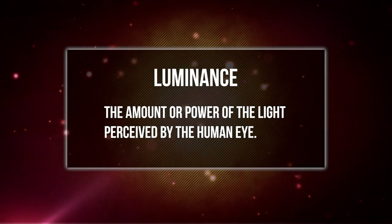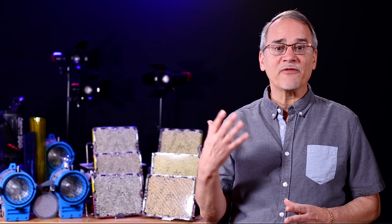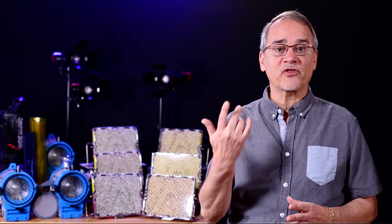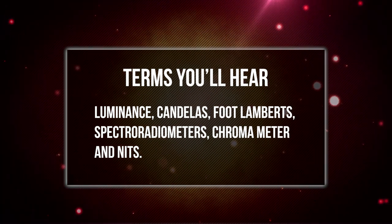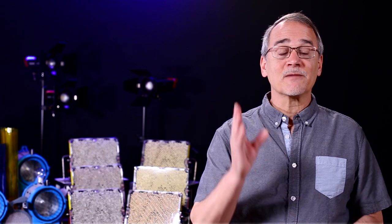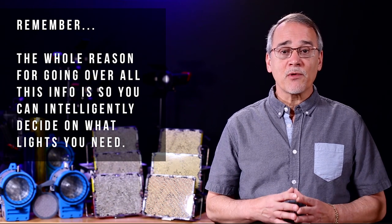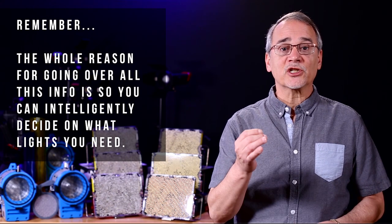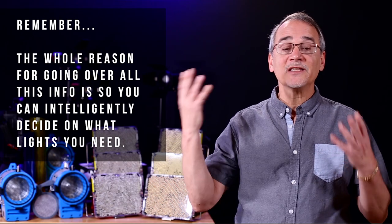Luminance describes the amount or power of the light perceived by the human eye. In other words, it indicates the brightness of light emitted or reflected off a surface and how you perceive it. Don't get confused by all these terms, as people will talk about lumens, candelas, foot lamberts, spectroradiometers, chromameters, and nits. It's just the brightness of the light. You don't have to remember all these terms, as we'll eventually point out what you do look for in lighting.